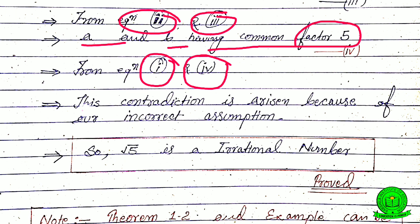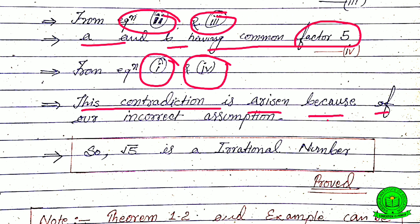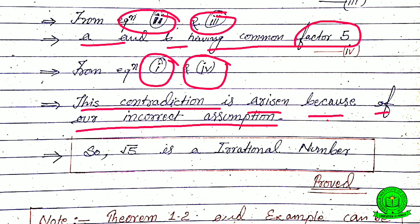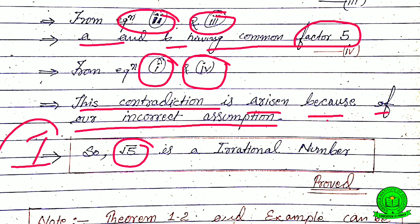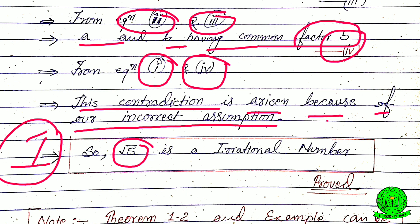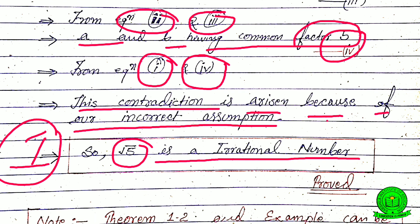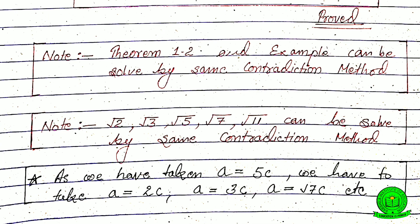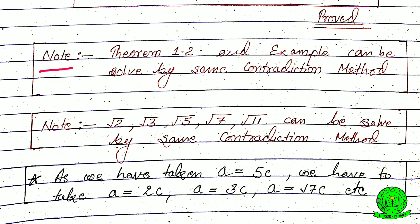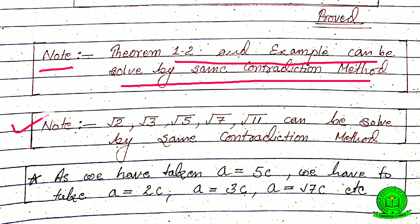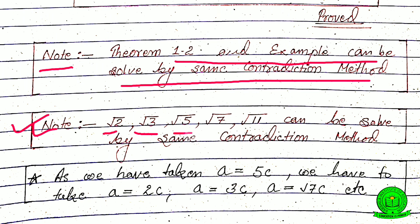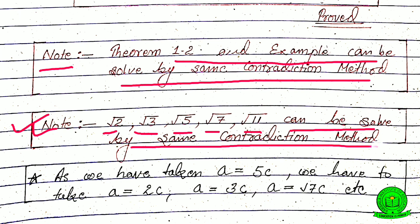This contradiction has arisen because of our incorrect assumption. We assumed root 5 is a rational number, which means a and b should have only one common factor — that is 1 — but here 5 is a common factor, which is a contradiction. Therefore root 5 is an irrational number. Proved. Note: Theorem 1.2 and examples including root 2, root 3, root 5, root 7, root 11 can all be solved by the same contradiction method.